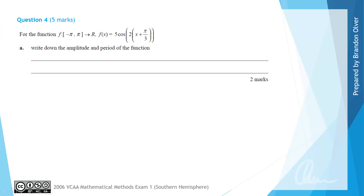For question 4, we have the function f with a domain of negative pi to pi, both included, with a rule f of x equals 5 cos of 2x plus pi on 3. For part a, we're asked to write down the amplitude and period for the function.